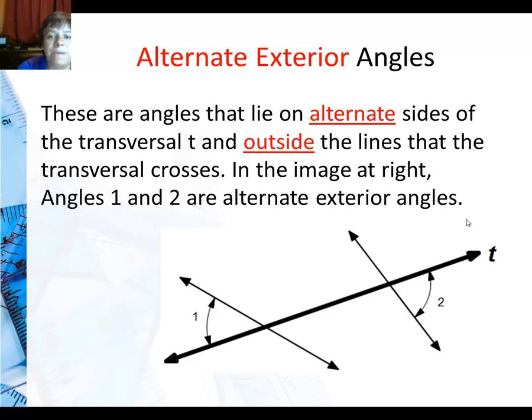Then finally we have alternate exterior angles. We still have exterior where we're on the outside of the two lines. But this time on the transversal, because it says alternate, one will be on top and one will be on bottom. So angle 1 is above the transversal and outside. Angle 2 is below the transversal and outside.